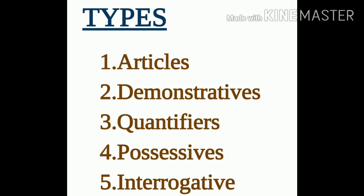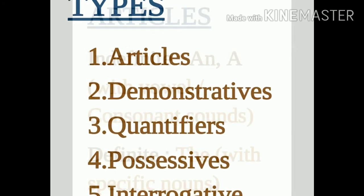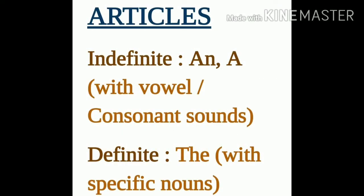Let's begin with the first category, i.e. articles. Articles are among the most common of the determiners. There are three singular articles: a, an, and the. They come at the very beginning of the noun phrase.